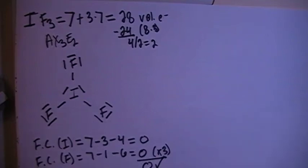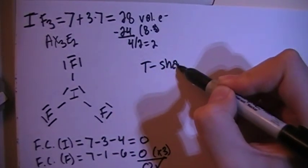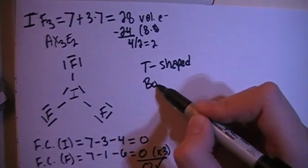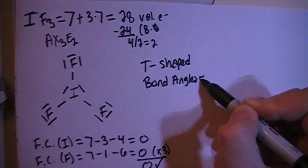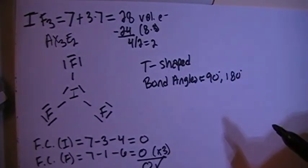Now looking at the shape, when you have AX3E2 type of structure, the shape is going to be called T-shaped, and when you have a T-shaped structure, the bond angles are going to be approximately 90 degrees and 180 degrees.